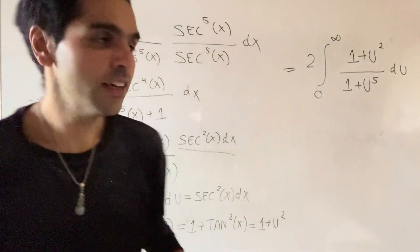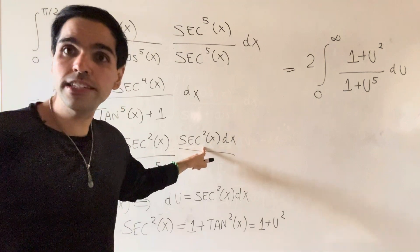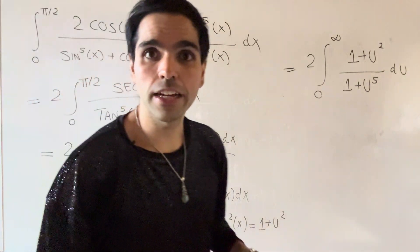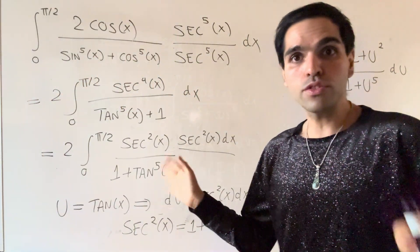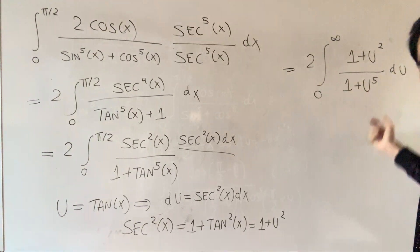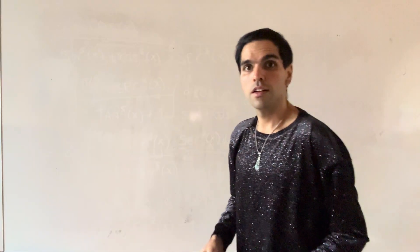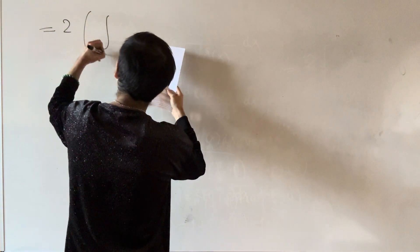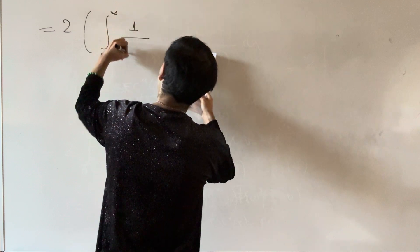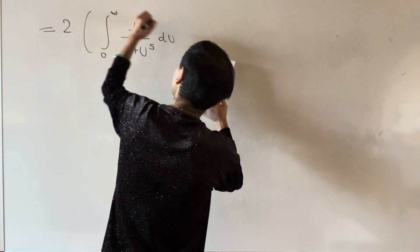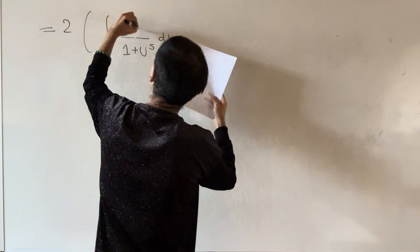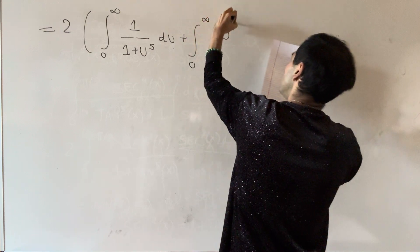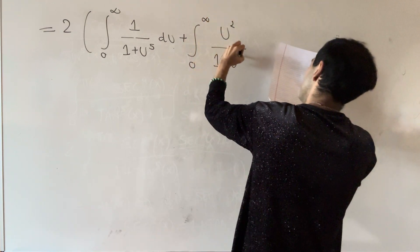The du comes from the first secant squared, and the one plus u squared comes from the second secant squared. Now there's no more trig — we just have a polynomial function. So we're left with two times the integral from zero to infinity of one over one plus u to the fifth du, plus the integral from zero to infinity of u squared over one plus u to the fifth du.